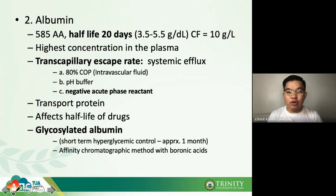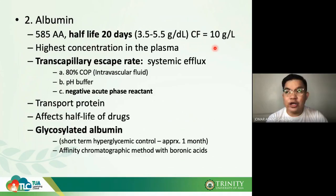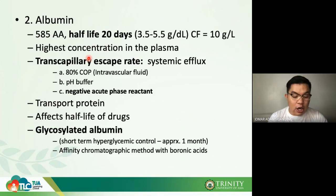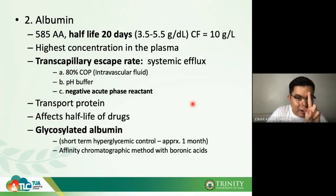Albumin has the highest concentration of all major plasma proteins. The conversion factor for albumin is 10. Albumin shows systemic efflux, especially in transcapillary escape, with a transcapillary escape rate of approximately 80% in intravascular fluid. It can also act as a pH buffer and is a negative acute phase reactant.